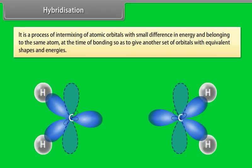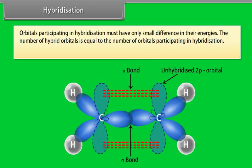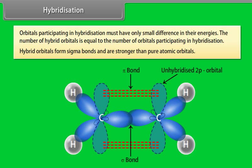Hybridization is a process of intermixing of atomic orbitals with small difference in energy and belonging to the same atom at the time of bonding, so as to give another set of orbitals with equivalent shapes and energies. Orbitals participating in hybridization must have only a small difference in their energies. The number of hybrid orbitals equals the number of orbitals participating in hybridization. Hybrid orbitals form sigma bonds and are stronger than pure atomic orbitals.